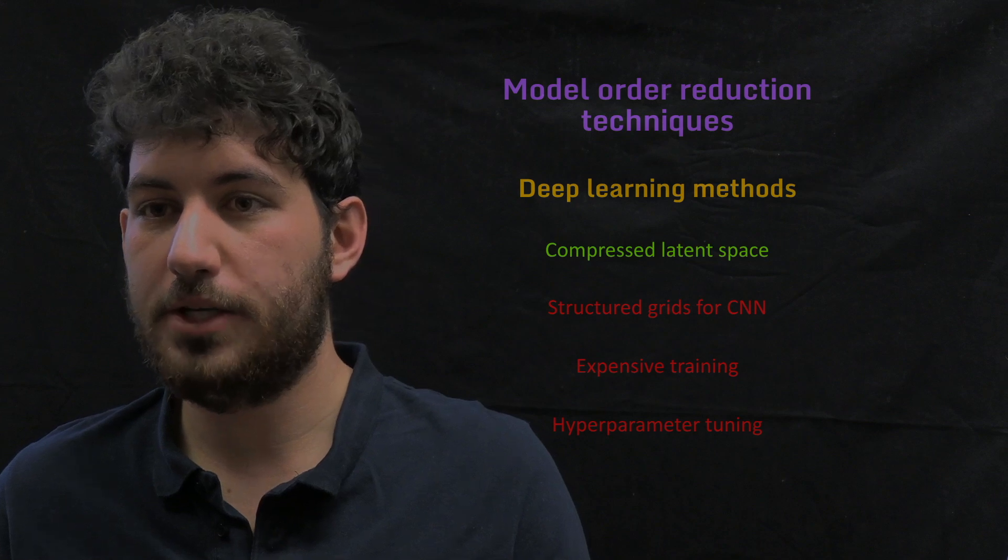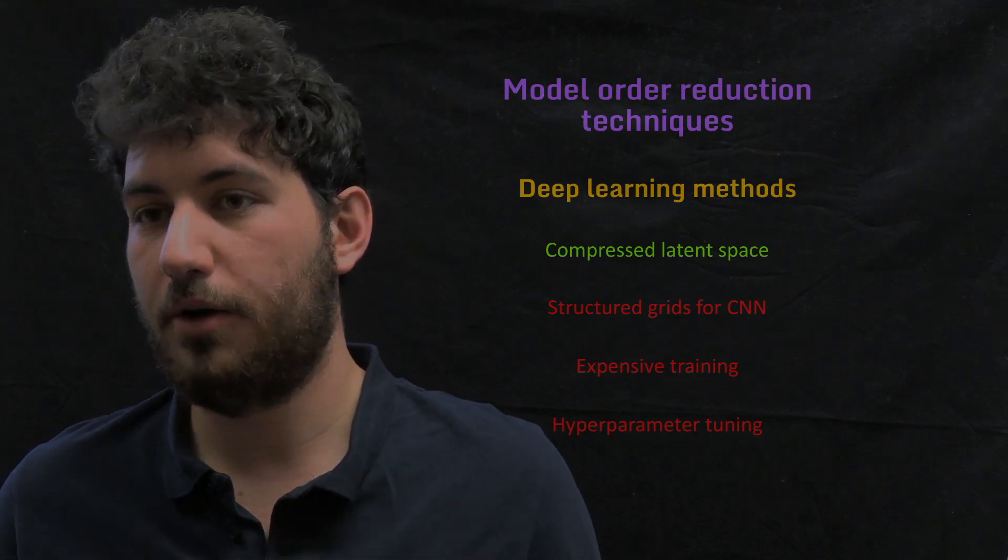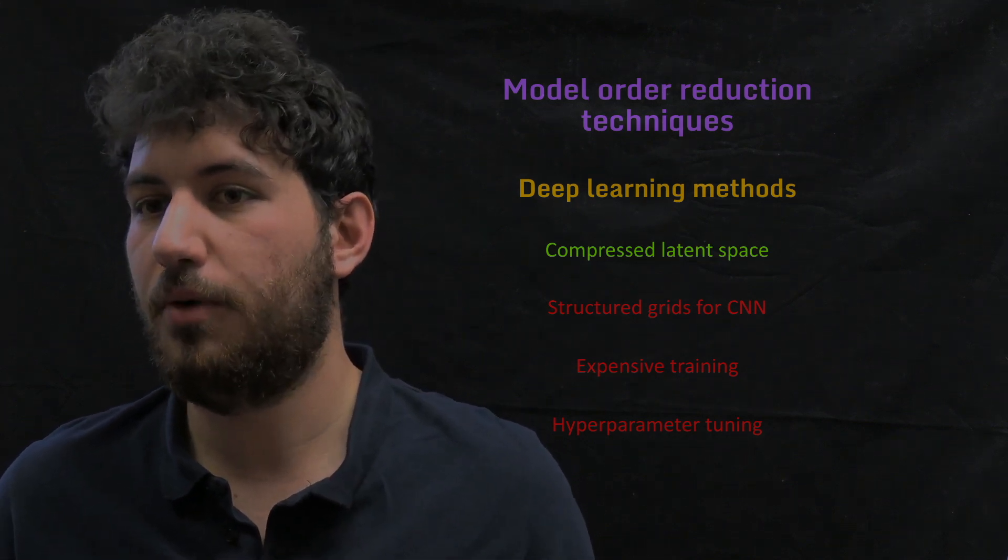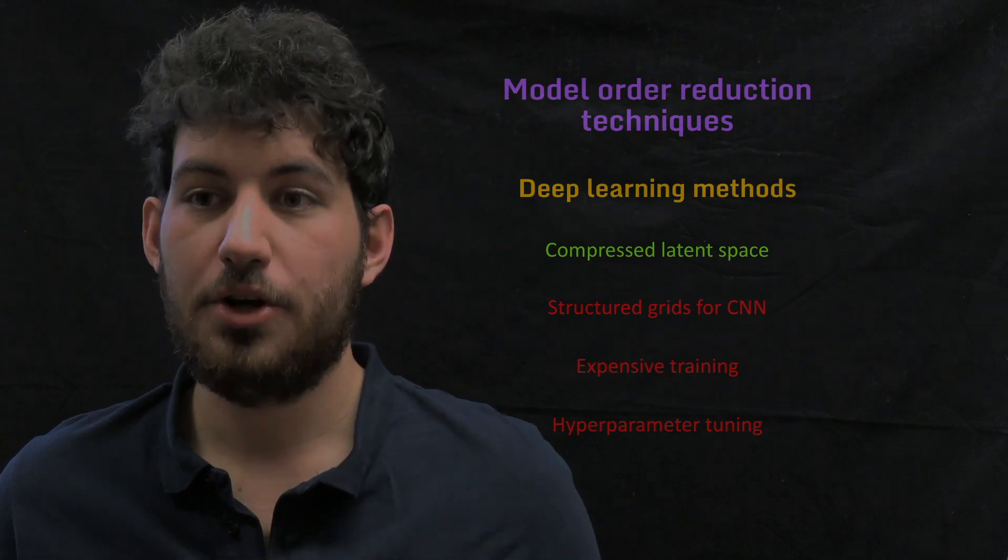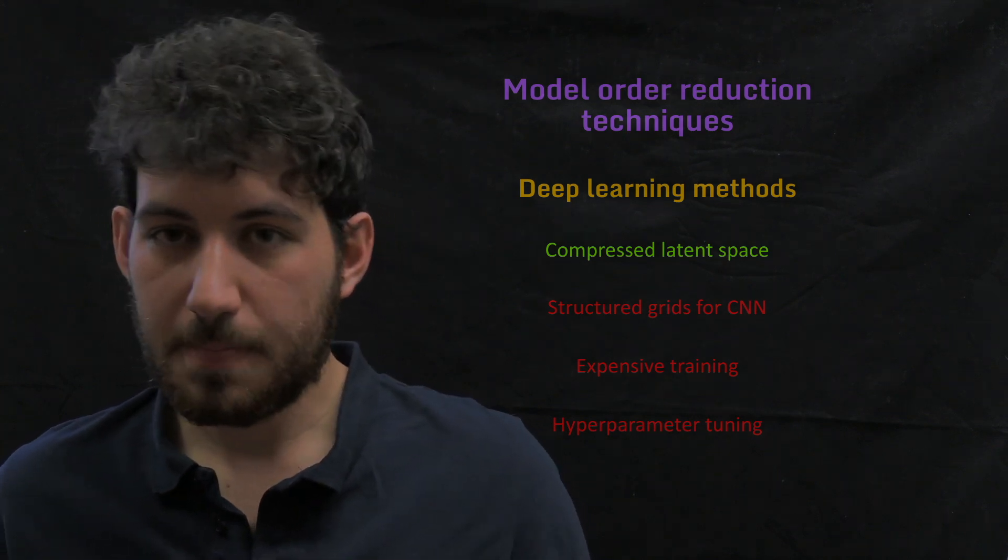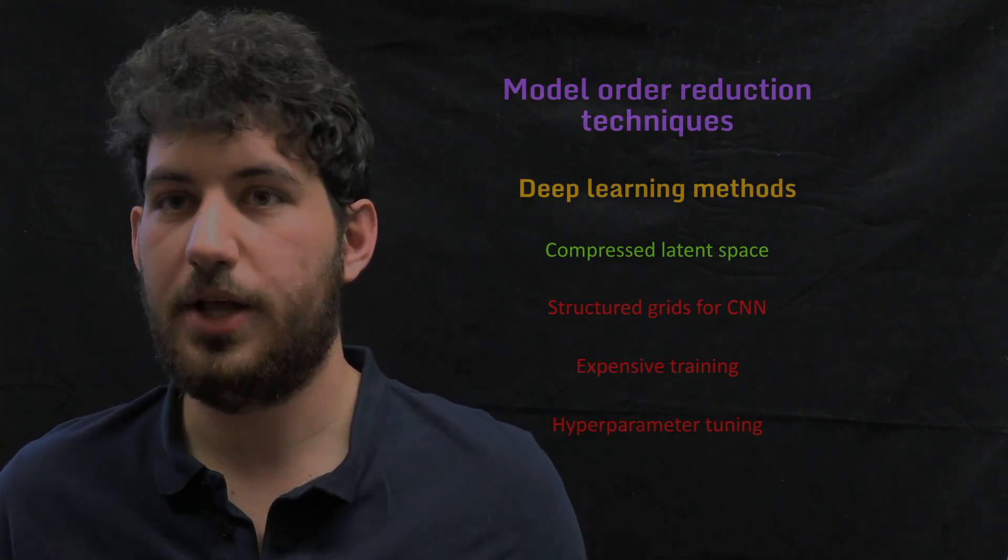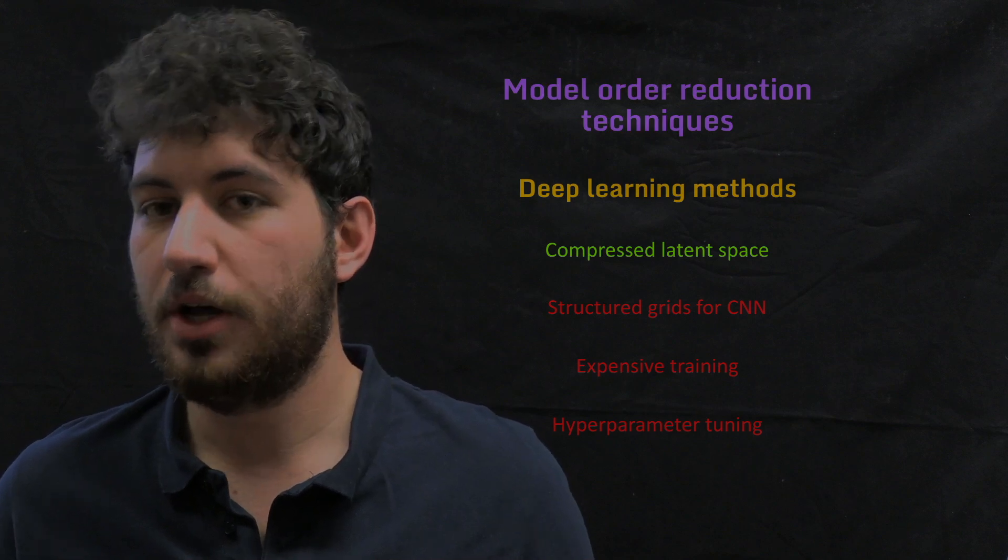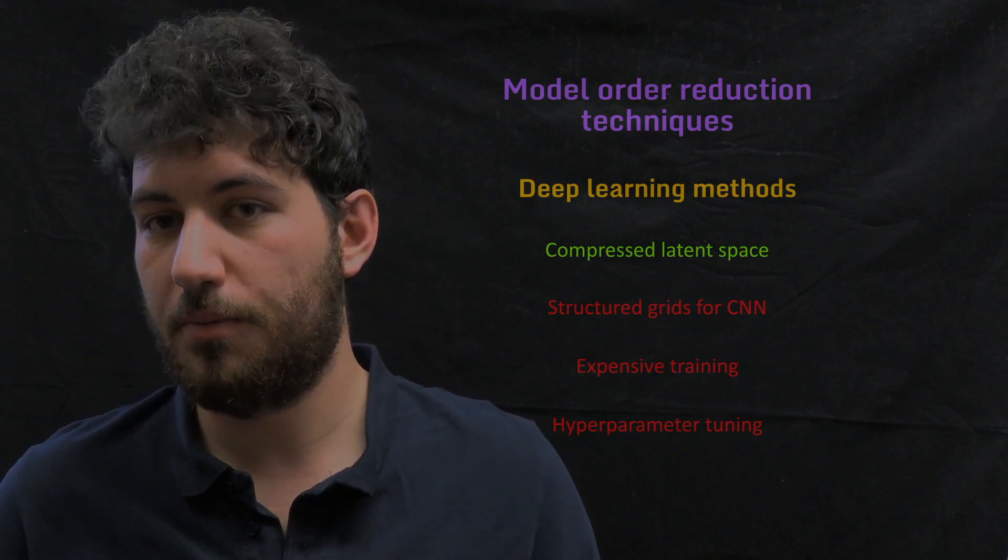But nowadays, all these methods are based on autoencoders. In particular, the most successful ones are based on convolutional neural network autoencoders. So they need structured grids. If we go to unstructured grids, then we need either to interpolate and we lose precision, and we also add an extra cost to our model.